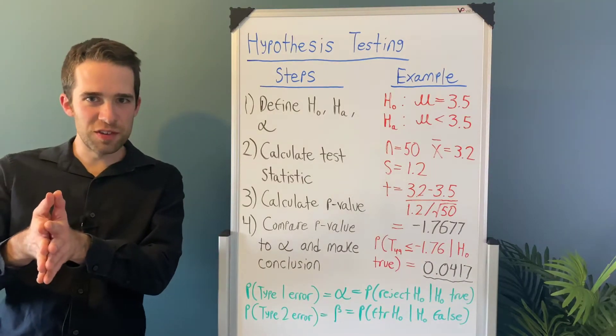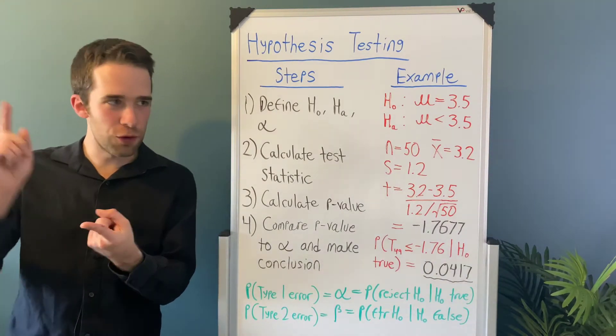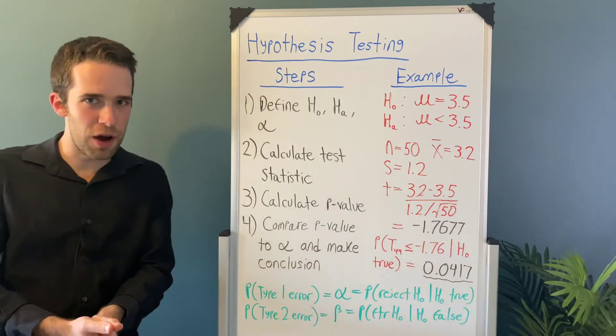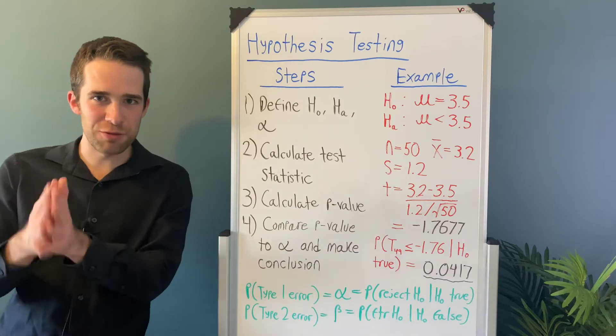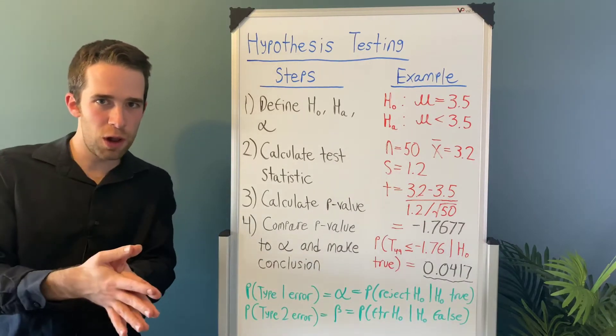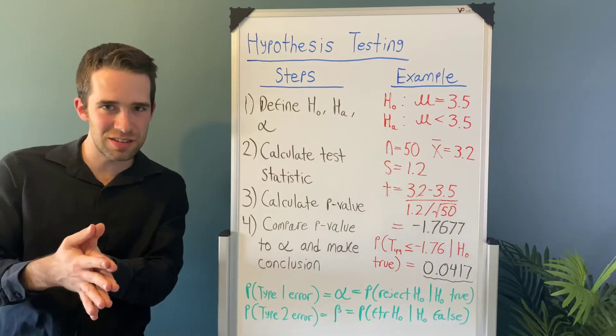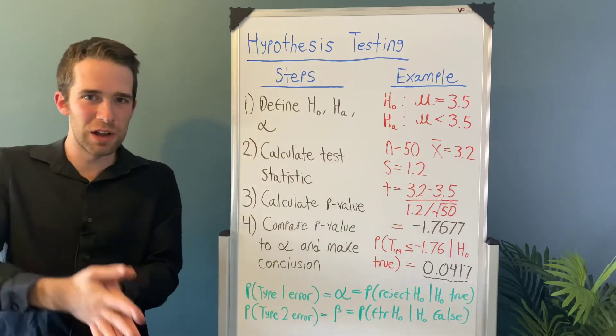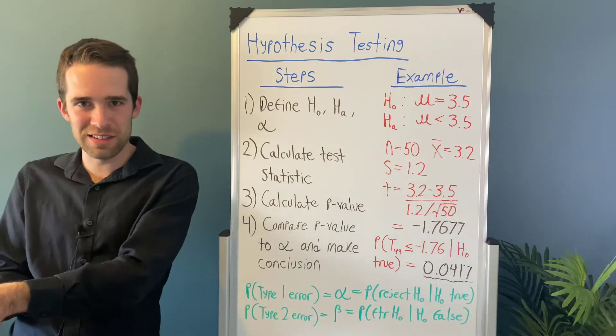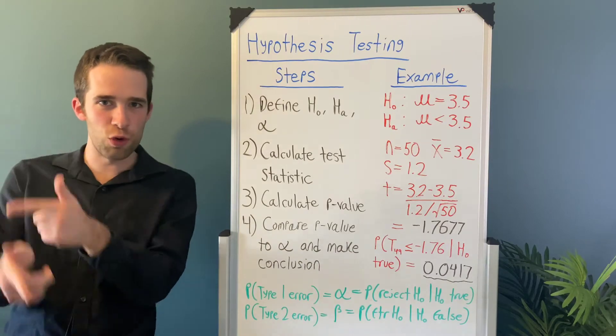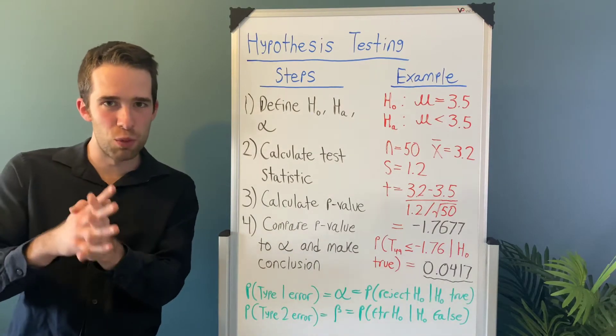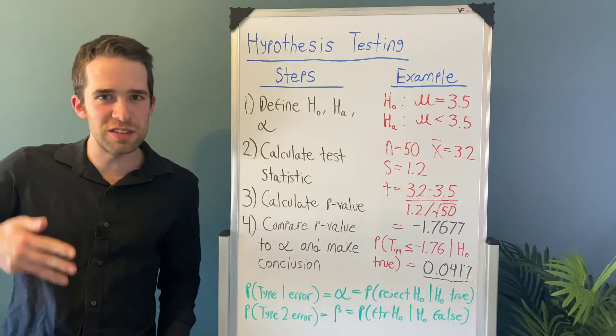So these are the following steps to a hypothesis testing problem. First of all, we're going to define a null hypothesis, an alternative hypothesis, and a significance level. After that, we're going to calculate a test statistic. Third of all, we're going to use that test statistic to calculate a p-value. And then in our last step, we're going to compare that p-value to our significance level alpha. You're either going to reject or fail to reject the null hypothesis, and then you're going to make a real world conclusion. So let's walk through each one of these steps.